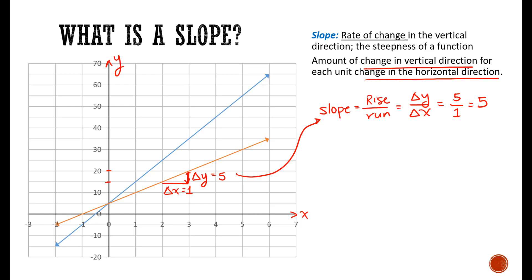What this implies is that if x increases by 1 unit, y goes up by 5 units. If x goes up by 2 units, y would then go up by 2 times 5, which is 10 units.